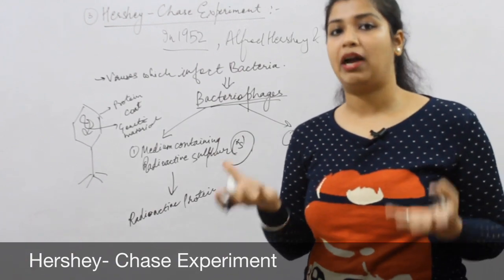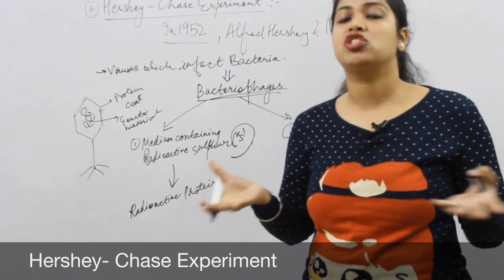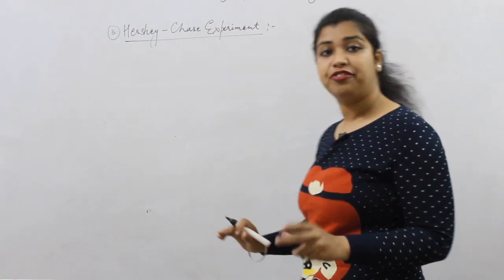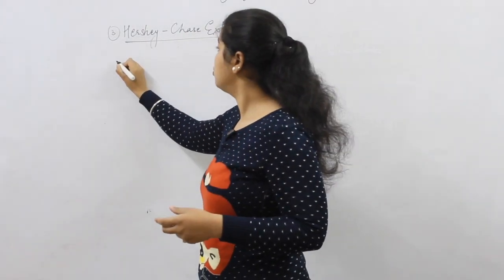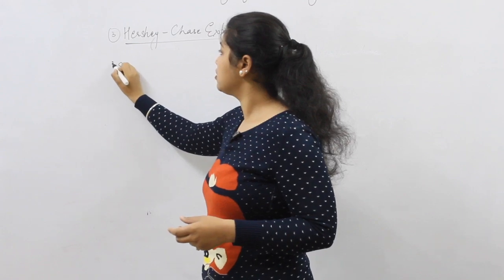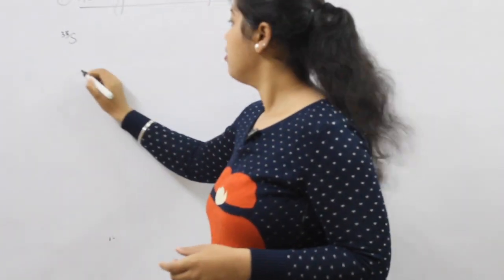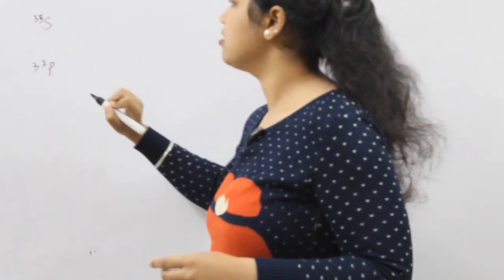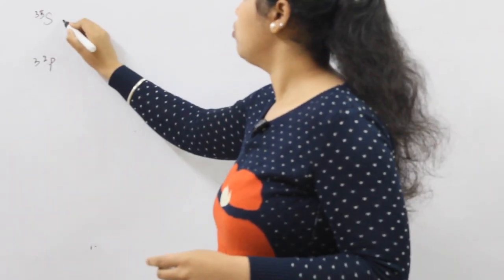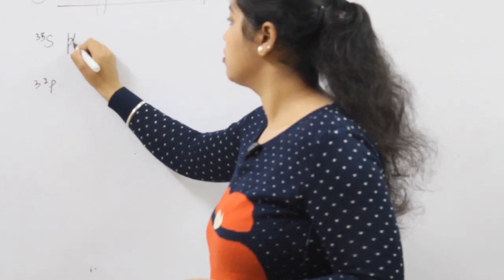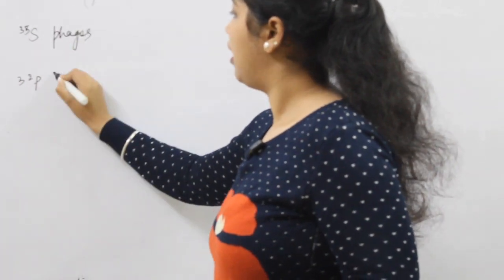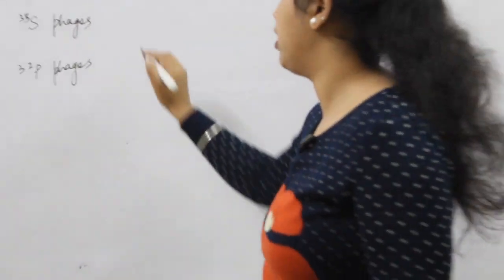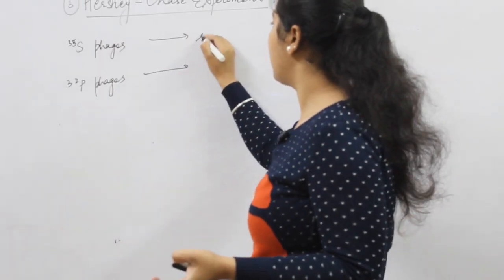So in the two batches — one with radiolabelled protein coat (S35) and the other with radiolabelled DNA (P32) — they infected two batches of bacteria called E. coli. We have two types of phages because we grew them in two different media, and we infected both types onto E. coli.